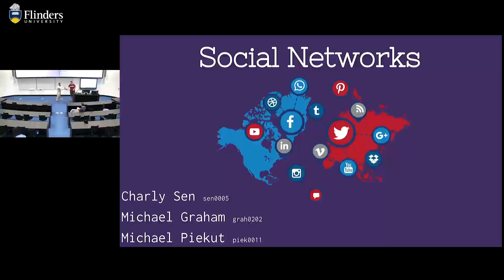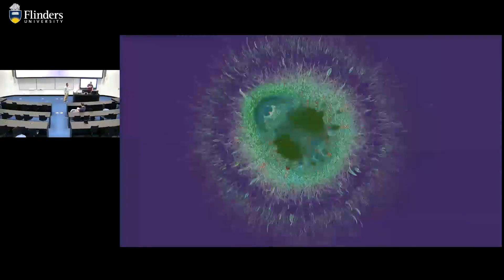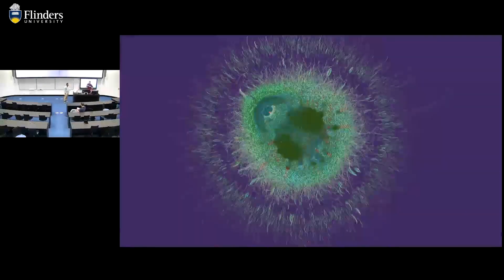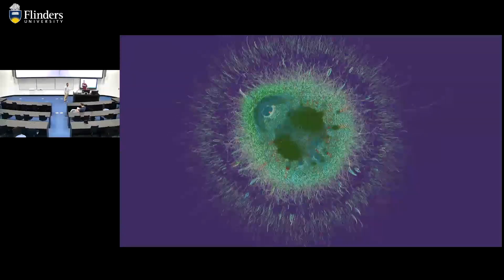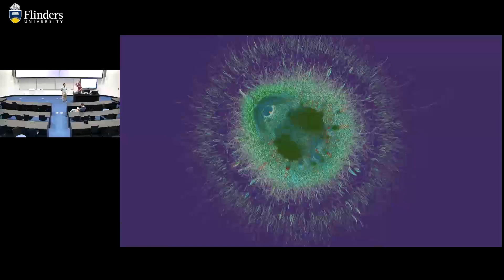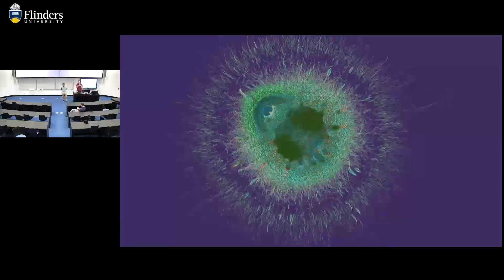We created a network graph using Gephi and we came up with this graph here. As you can see it's a fairly strange looking graph, but there's like a central eye in the middle there. You've got this little black, almost like a small pupil there.